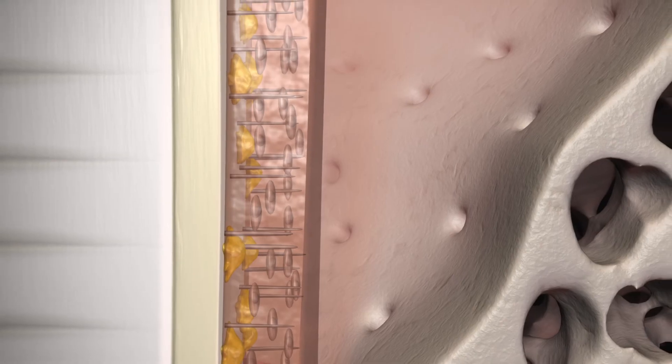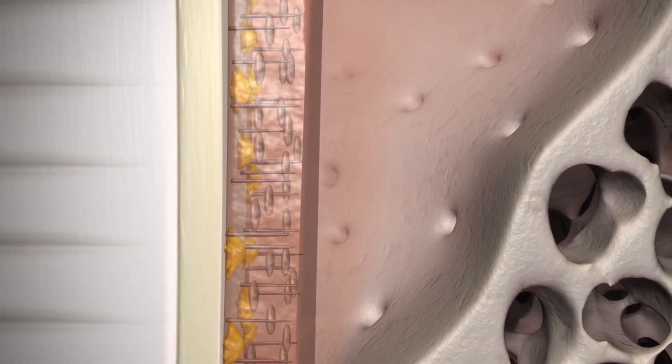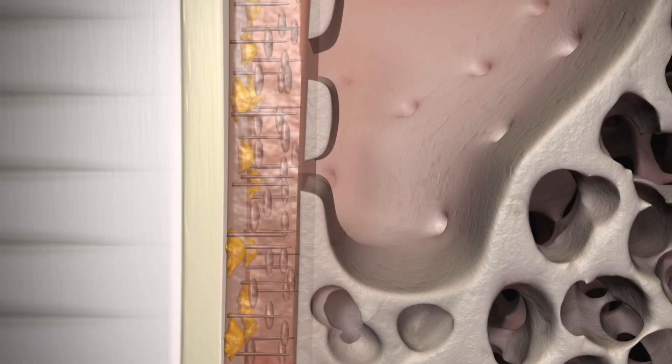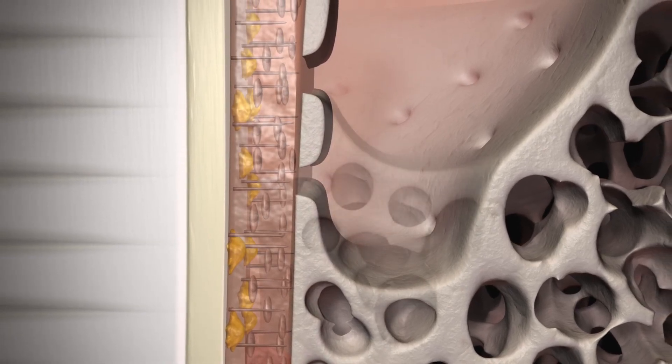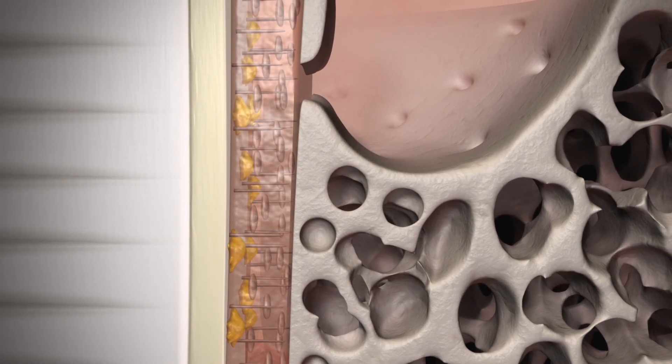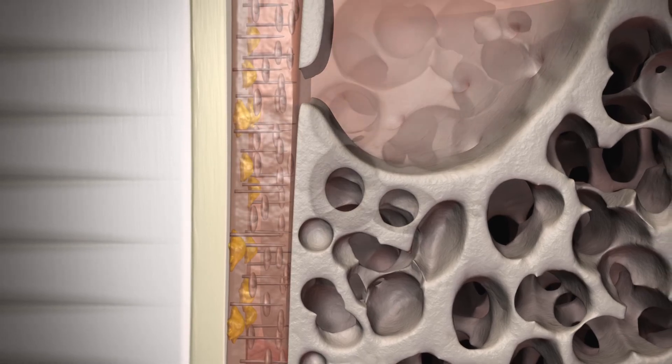In connection with the processes described up to this point, new alveolar bone grows on the root surface and in the defect gap. Thus, the periodontal ligament gap achieves its physiological width.